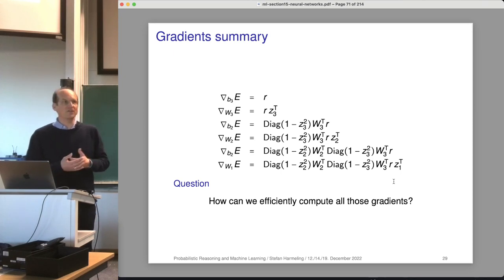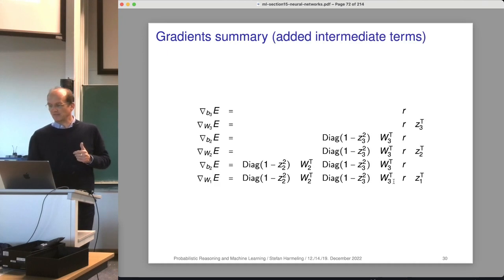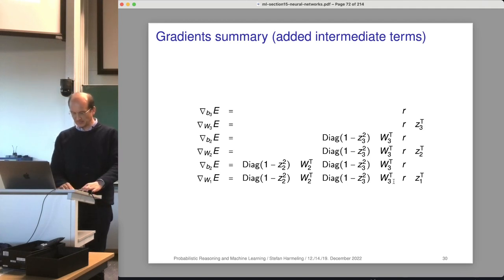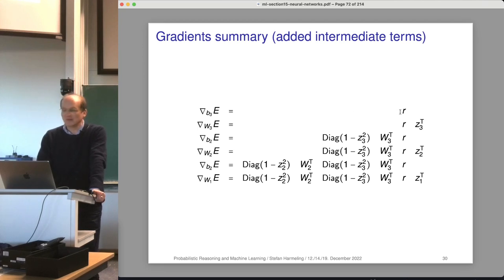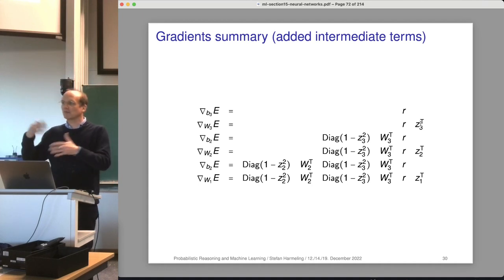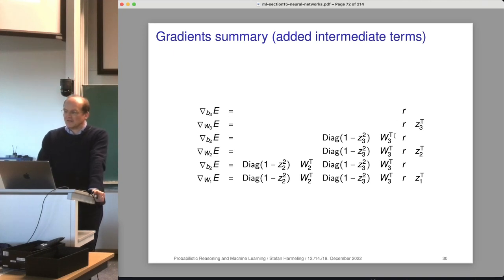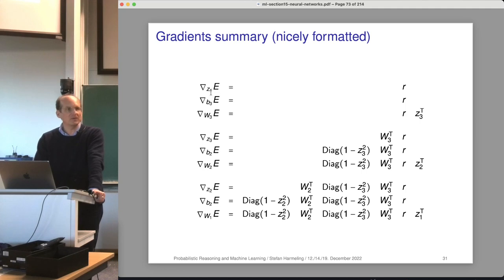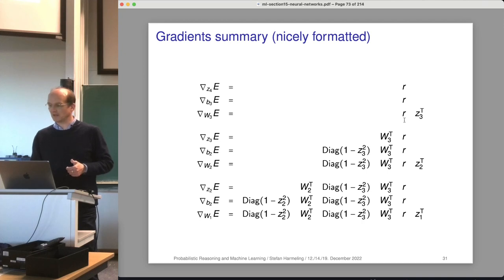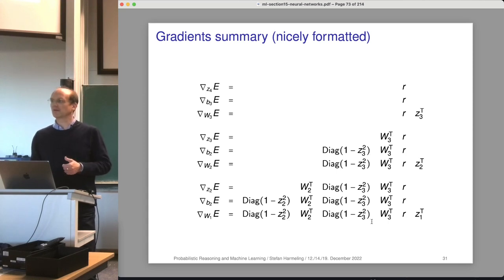Let's think about how to compute these gradients efficiently. There's always a lot we can recycle. We start with the residual — that is the derivative of the output. We multiply from the right-hand side with Z3, which was the activation of the third layer. Then we take R and multiply from the left with this expression, and so on. We can add intermediate gradients with respect to Z4, Z3, and Z2 — showing the nice intermediate steps.